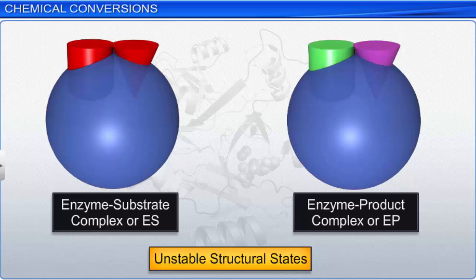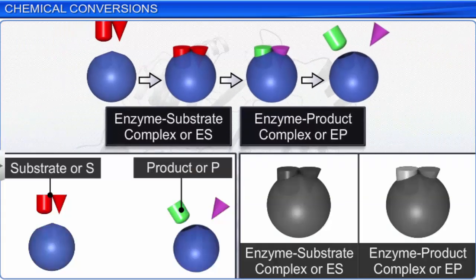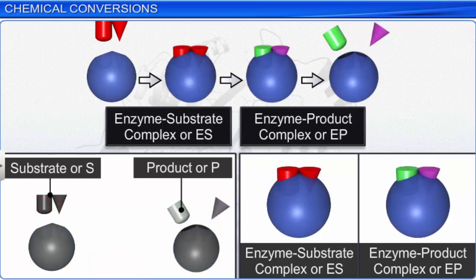Stability refers to the energy status of the molecule or the structure. In other words, stable structures can exist in nature without any uptake or release of energy. For example, S and P have a low energy status and are stable, whereas E-S and E-P complexes with a high energy status are unstable.